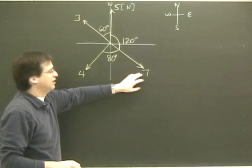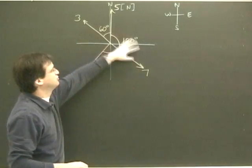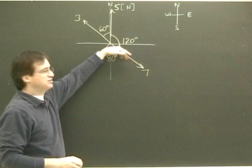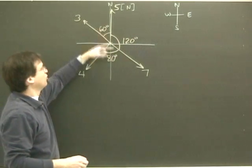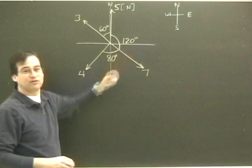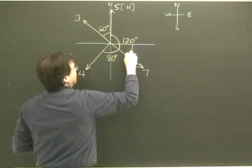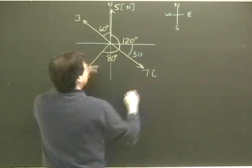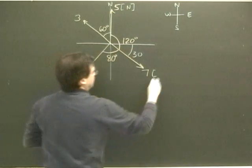This 7 here, I need to know what direction it's going relative to my north, south, east, and west. Well, I've got 120 degrees to the 7 from the north. This is 90 degrees here, so that leaves me 30 degrees. This angle here is 30 degrees, so I can call the 7 east 30 degrees south.